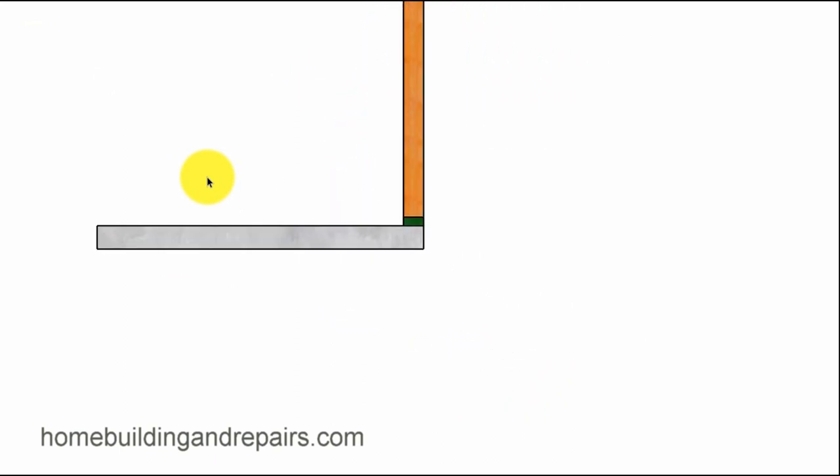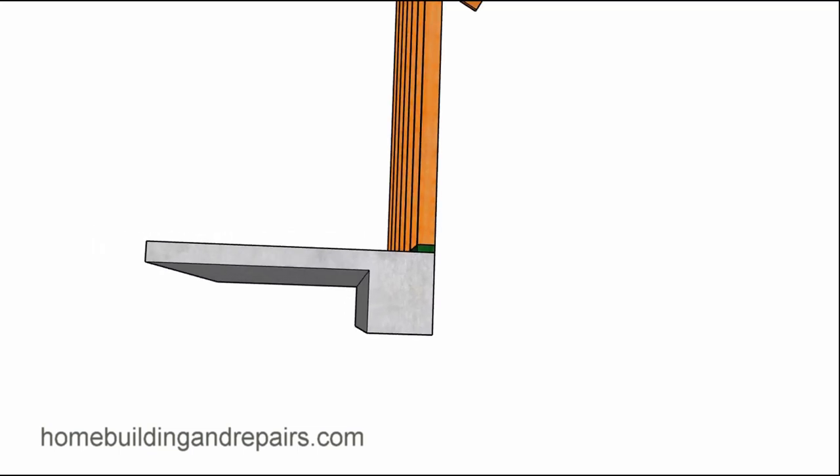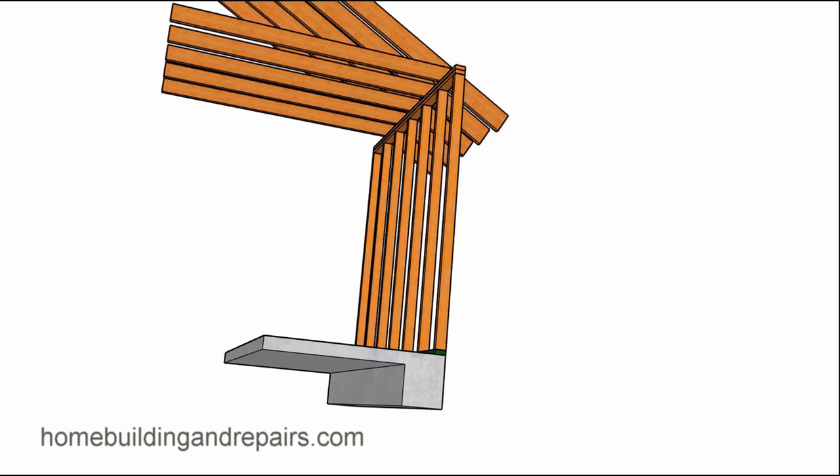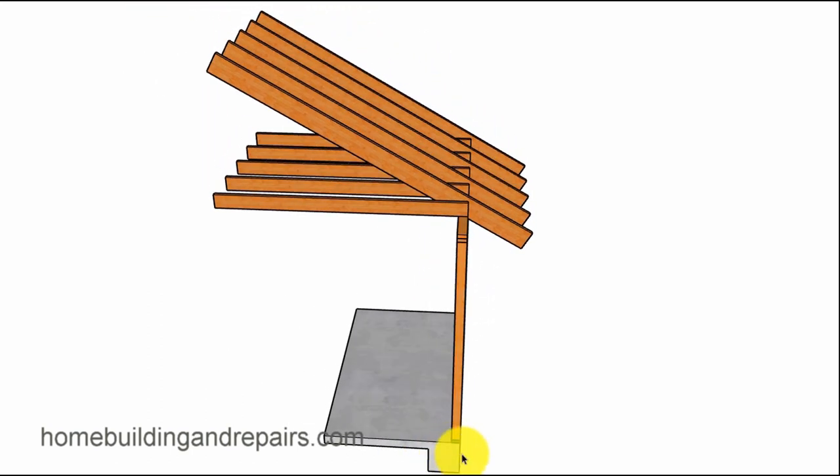So let's go ahead and get started. The first thing you're going to need to keep in mind about an exterior load-bearing wall is that it is going to require a footing, a concrete footing, to distribute the weight from above into the soil. So this is the number one thing. Going to need a concrete footing.